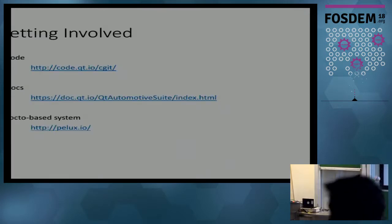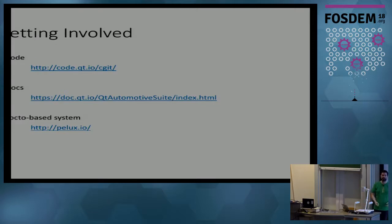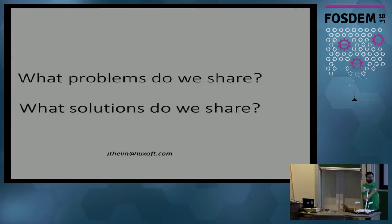You can find all these repositories at code.qt.io — look for Qt Application Manager, Qt IVI, and so on. You can also look at the Automotive Suite documentation where you get an index of all the modules. If you just want to get started quickly and see the Neptune UI running on a Linux system, we also have a system called PLUX from the old Pelagic Core days. There you have all the Yocto layers pre-integrated — you can build a Raspberry Pi image, boot it, and have the full system there to play with without spending time on integration.